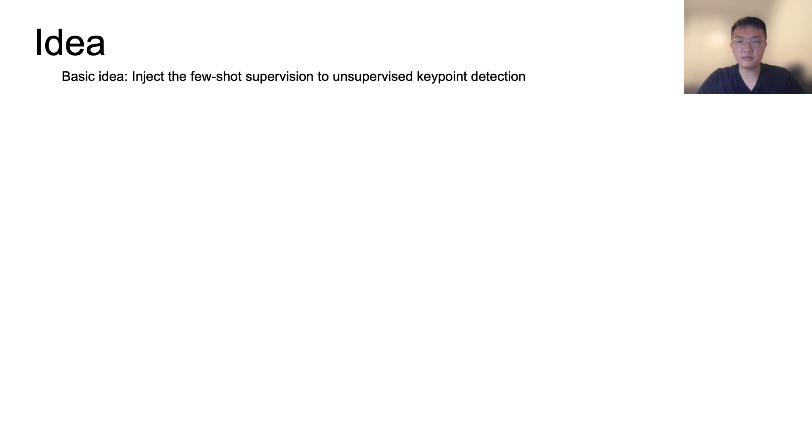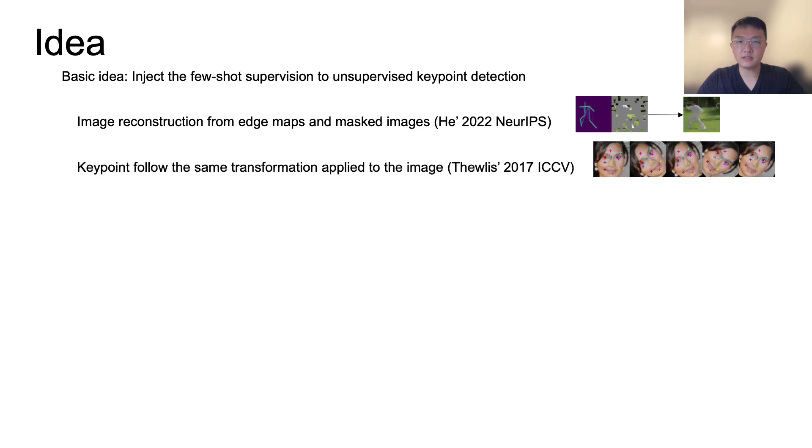This approach is mainly based on two previous methods. In the first method, the original image is reconstructed from learned edge maps and masked images. We find this image reconstruction crucial in our few-shot learning. In the second method, keypoints are enforced to follow the same transformation applied to the image. We find this very helpful in stabilizing the keypoints.